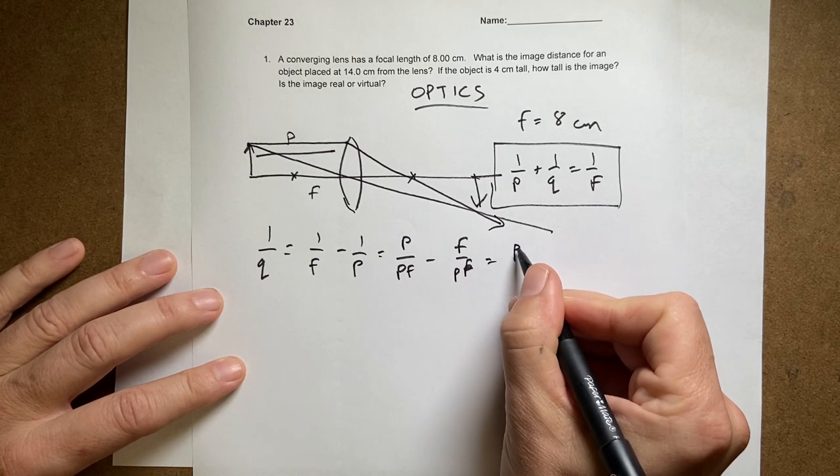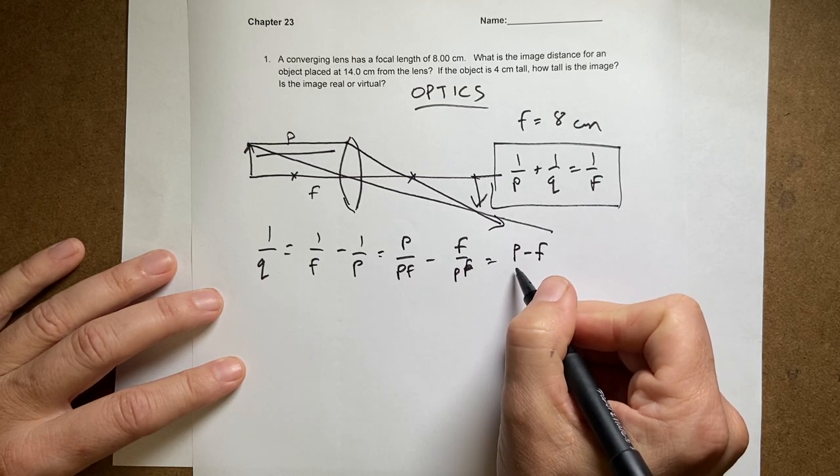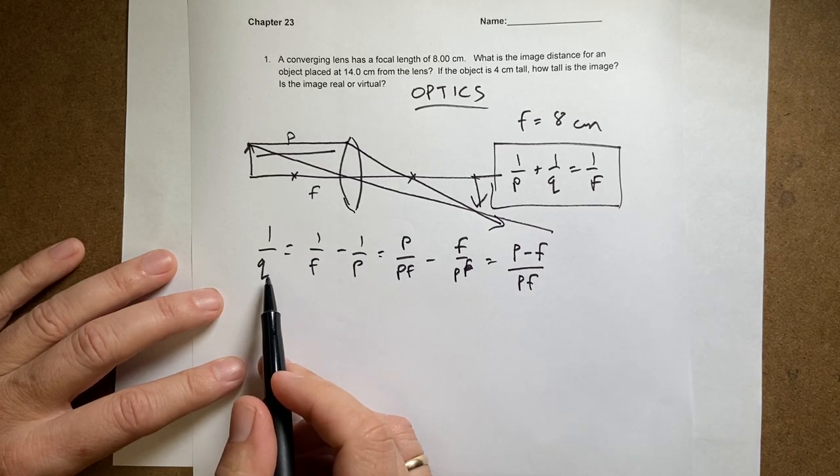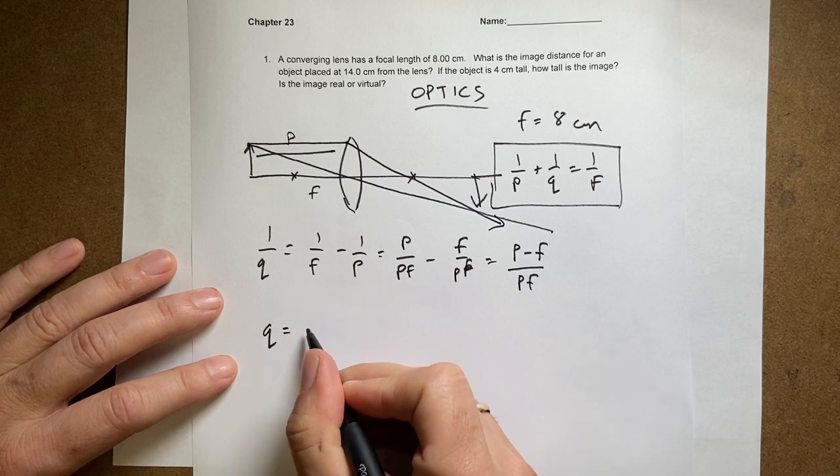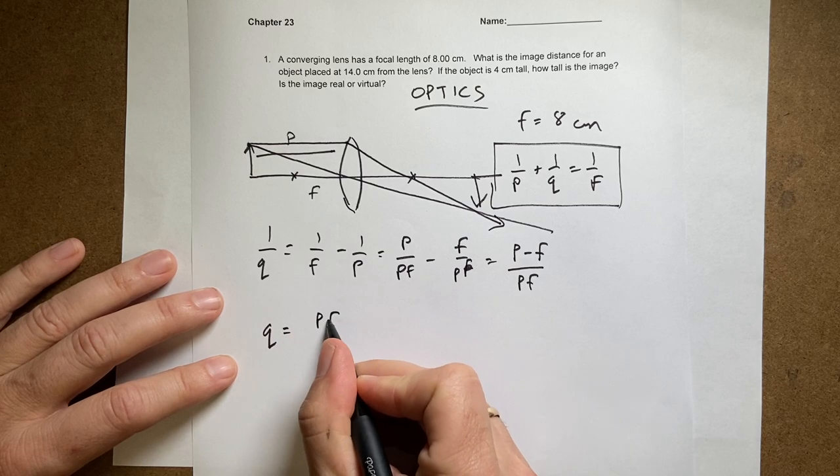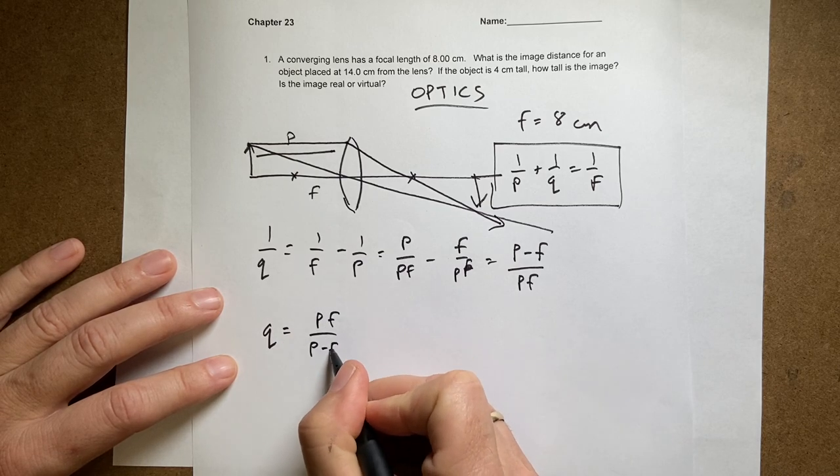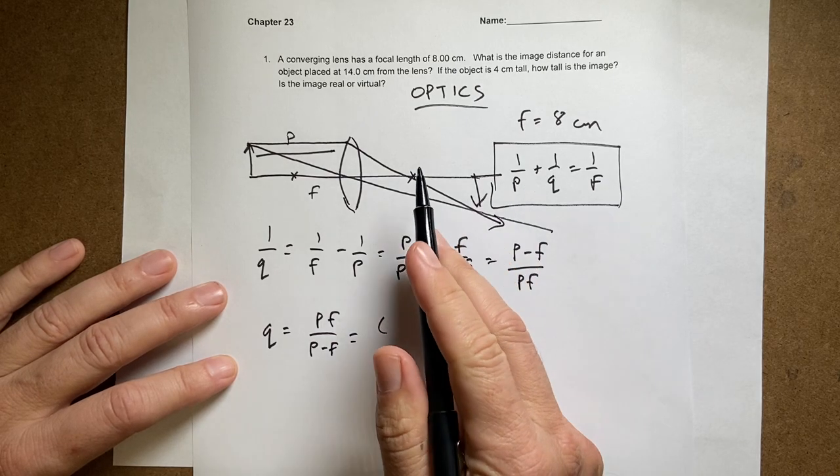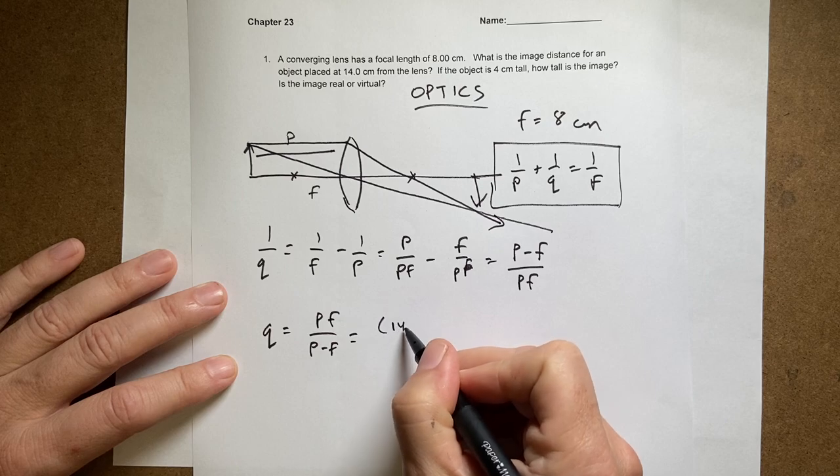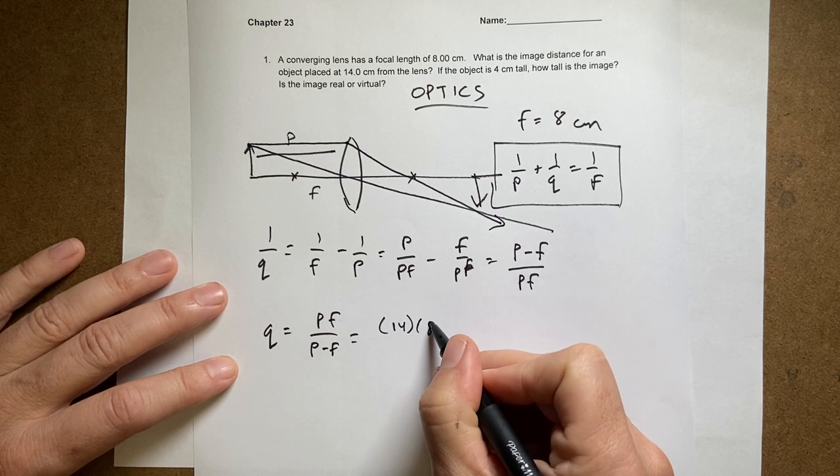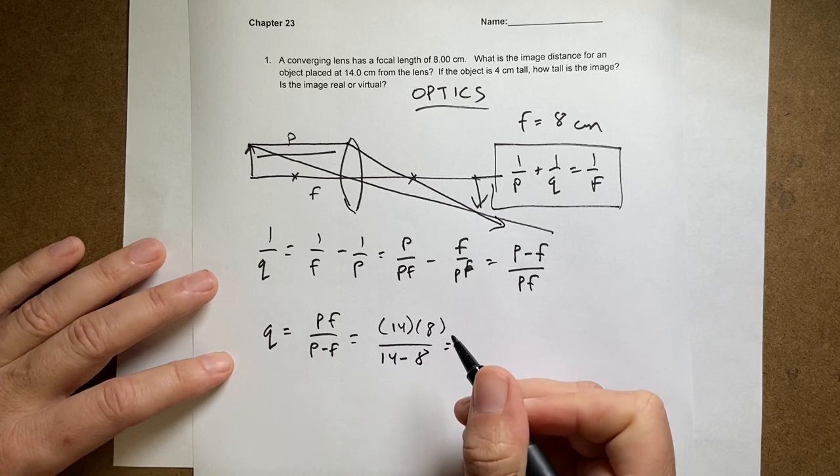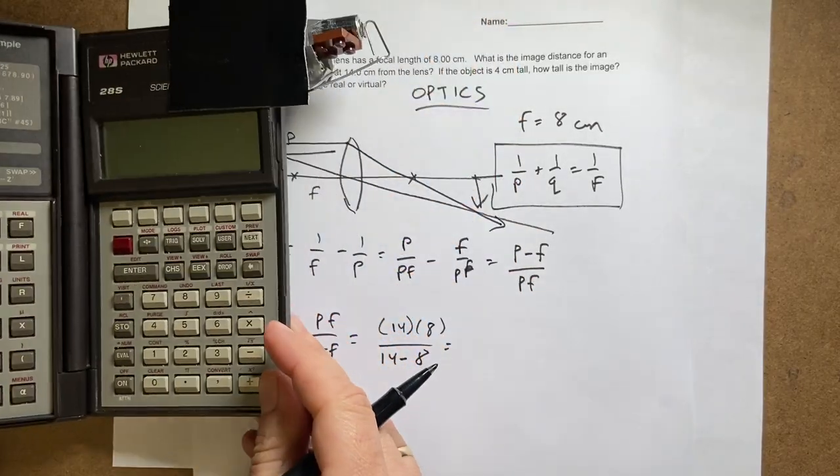I can invert both sides of this equation and I get Q = PF/(P - F). So it's going to be equal to—P was 14—14 times 8 over 14 minus 8. Let's just put our calculator right here.